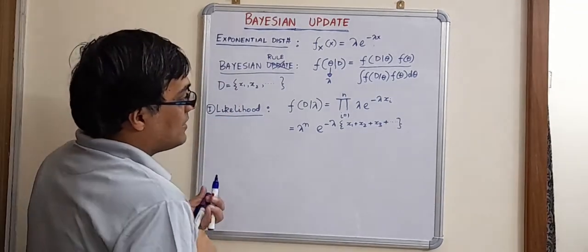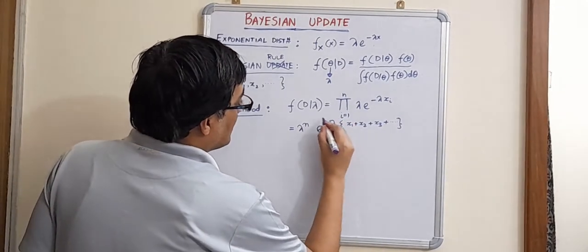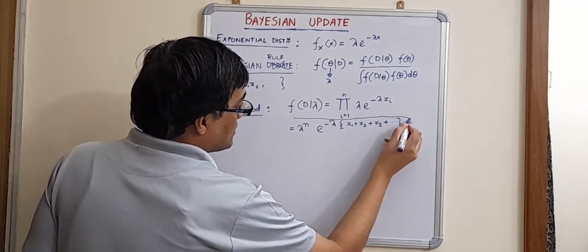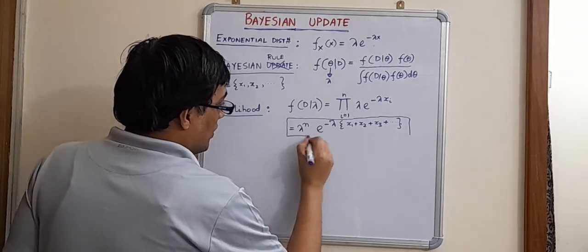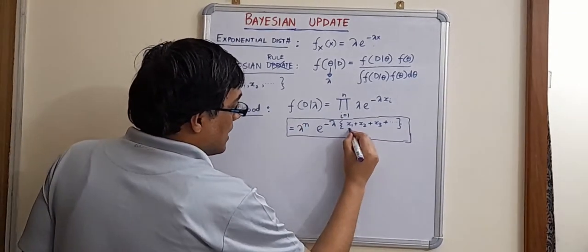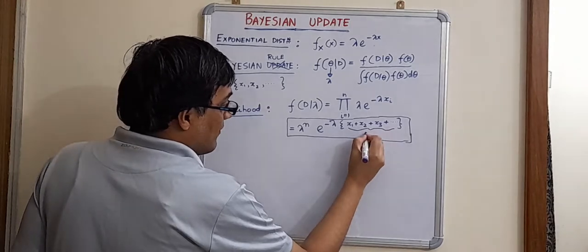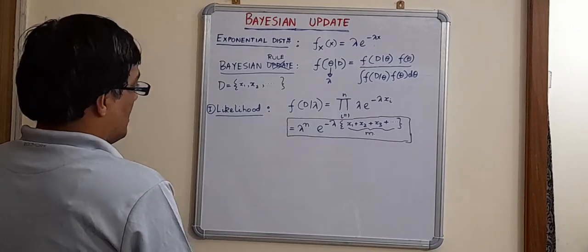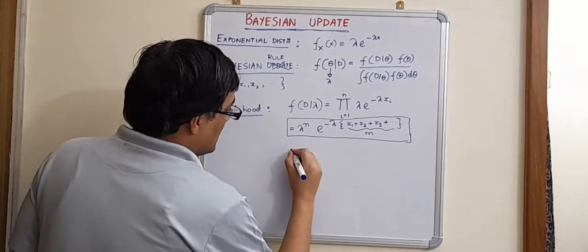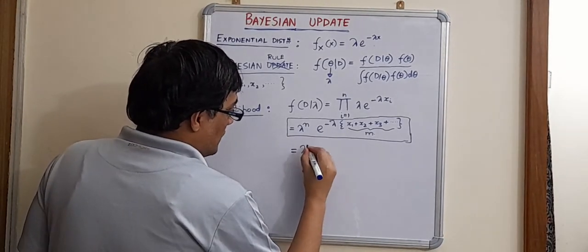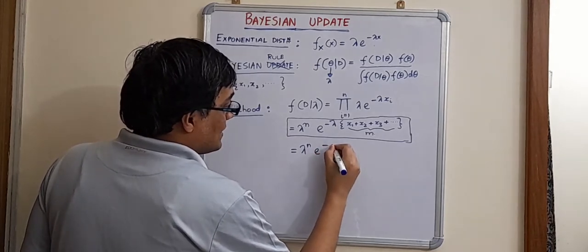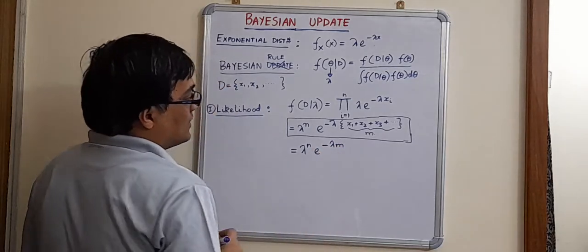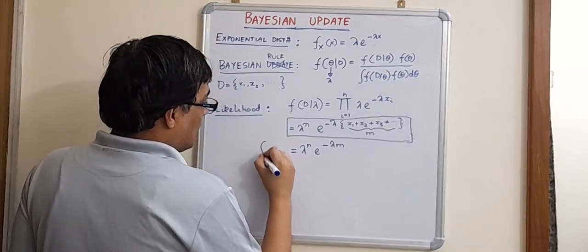So let us say that this guy, in case you just get lost, I'm just boxing it up a little bit. So this guy, I would say that this guy is m, which is a constant. So coming back, this becomes lambda to the power n into e to the power minus m lambda. That is fine. So this is the likelihood function.